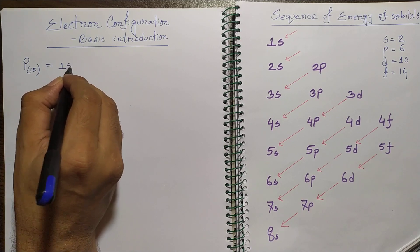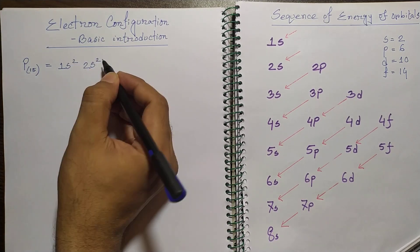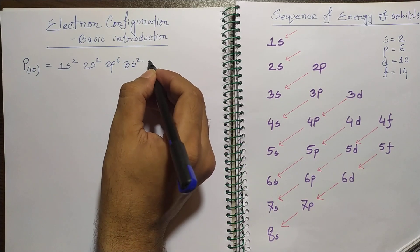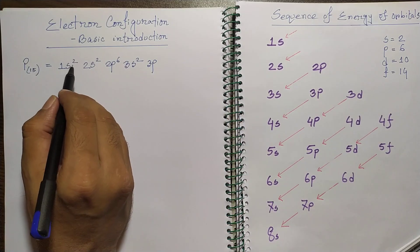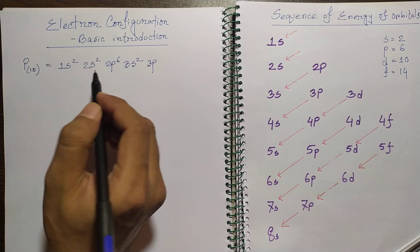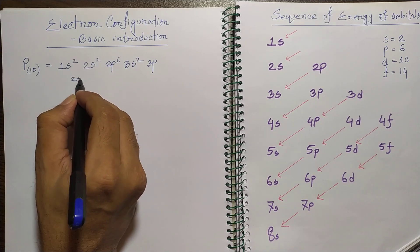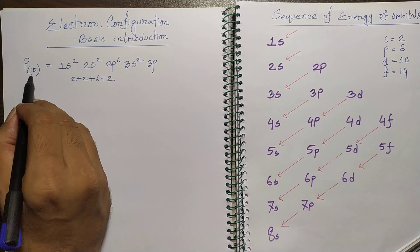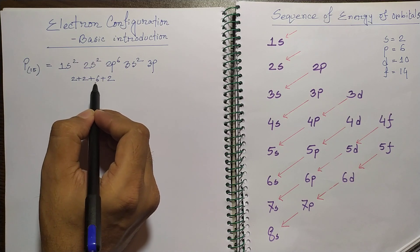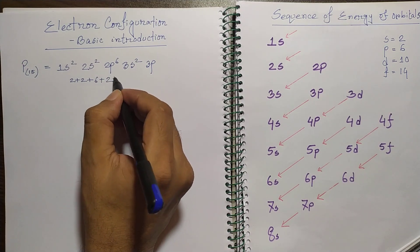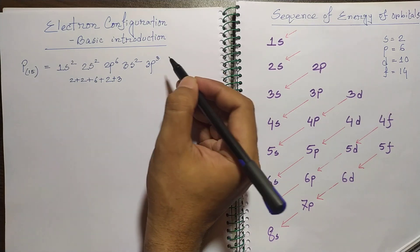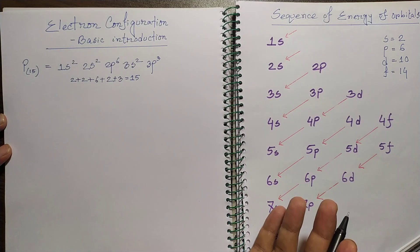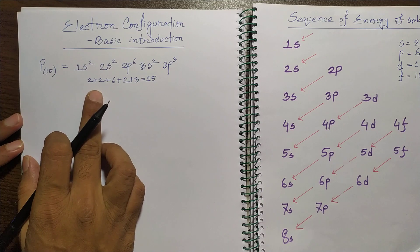For phosphorus we can go: 1s2, 2s2, 2p6, and then 3s2, 3p3. You can see the number of electrons in different orbitals. If we add them: 2+2+6+2 = 12, so there are 3 electrons left that go into the p orbital. This is the electron configuration of phosphorus — 1s2 2s2 2p6 3s2 3p3.